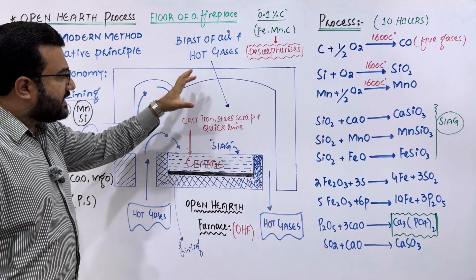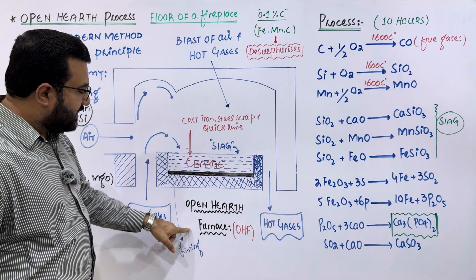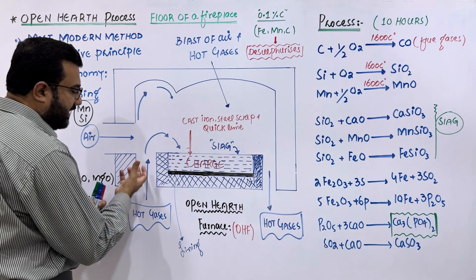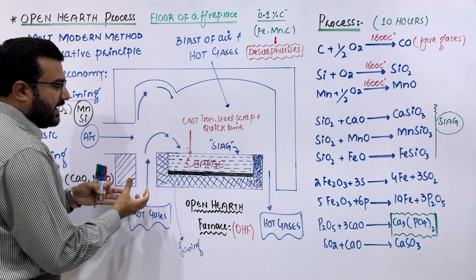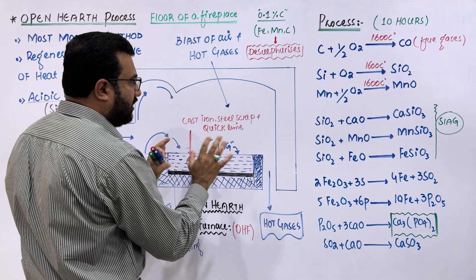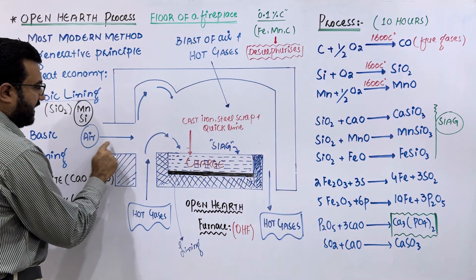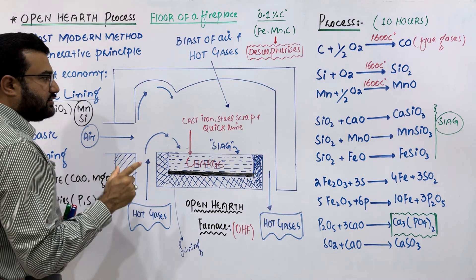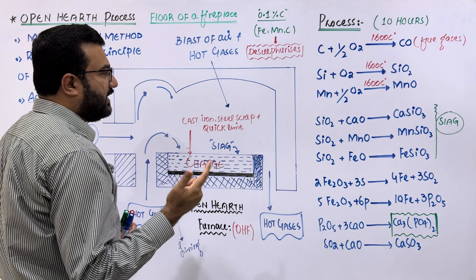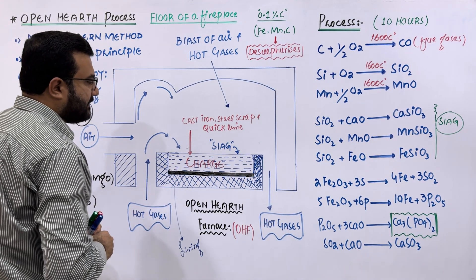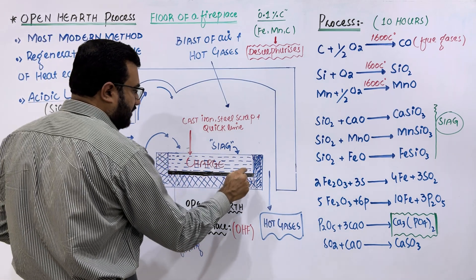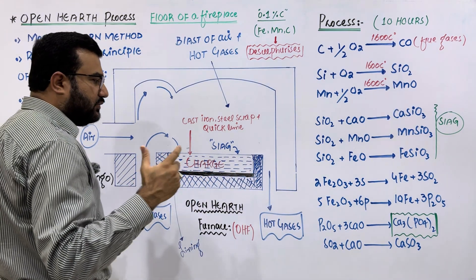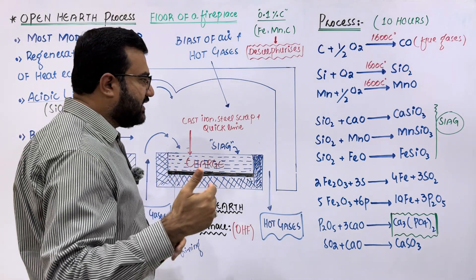This is the schematic diagram of the open hearth furnace. One inlet is for burning gases or hot gases, as the furnace is heated by hot gases. Air is introduced and the oxygen present in the air is used to oxidize impurities like carbon, silicon, and manganese. This is the hearth of the furnace where the charge is loaded. The charge is of two types: the lighter charge and the heavier charge.